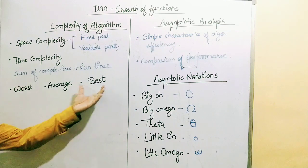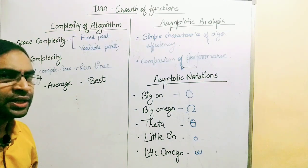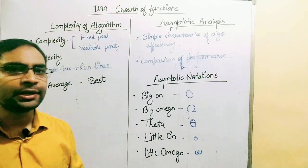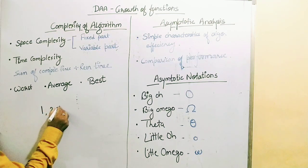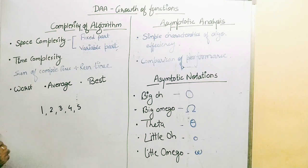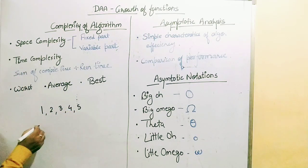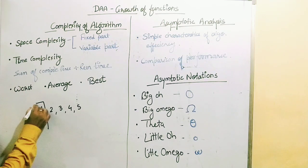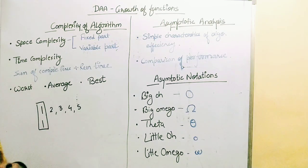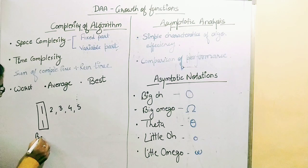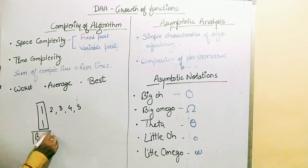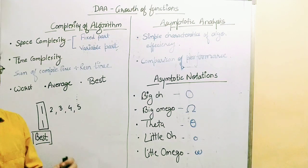Let me give you an example. If we have an array with elements 1, 2, 3, 4, and 5, and we are talking about linear search — if someone asks to search for number 1, we start searching and it is found at the first location. Immediately the algorithm gives us the result and takes minimum time. This is called the best case, because the algorithm takes minimum time in giving us the result.